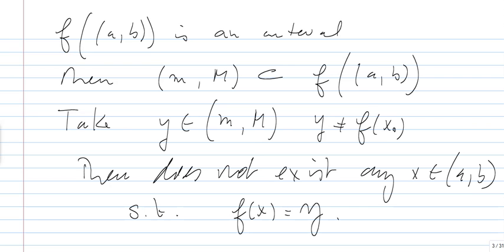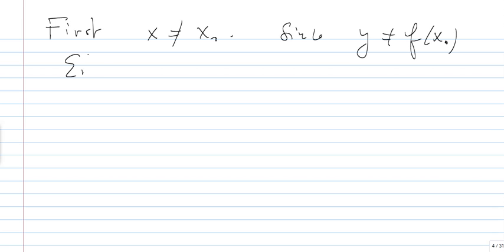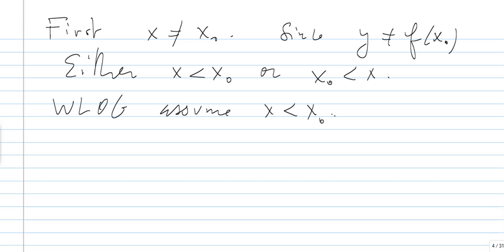Why? Because we have the following. First, x cannot be equal to x0, since y is different from F(x0). So either x is less than x0, or x0 is less than x. So without loss of generality, assume x is less than x0.